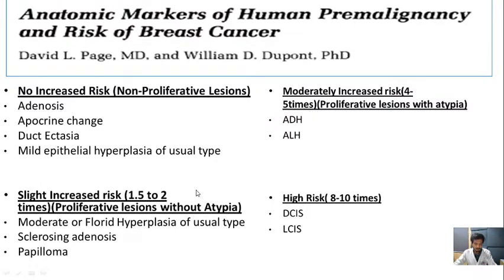In the proliferative lesions without atypia, it is moderate florid hyperplasia of usual type, sclerosing adenosis, and papilloma, which are related with 1.5 to two times of increased risk — a slight increased risk of cancer. The high-risk lesions, which include ductal carcinoma in situ and lobular carcinoma in situ, are associated with eight to ten times of increased risk.